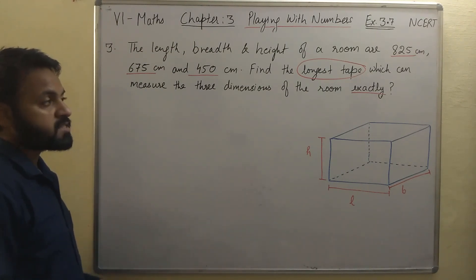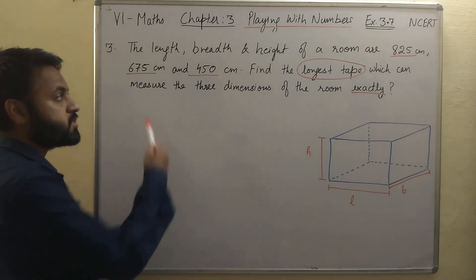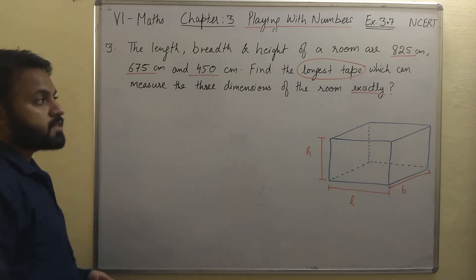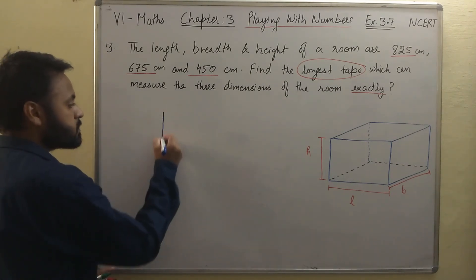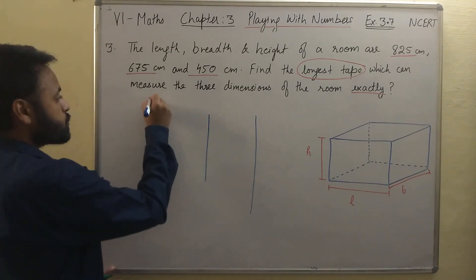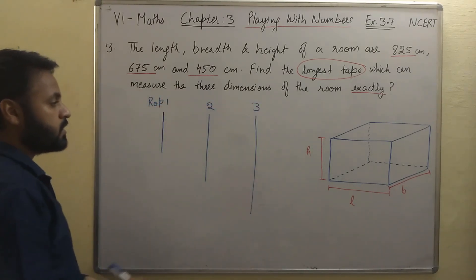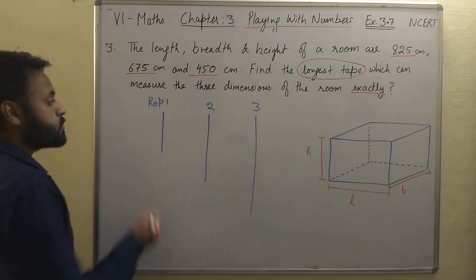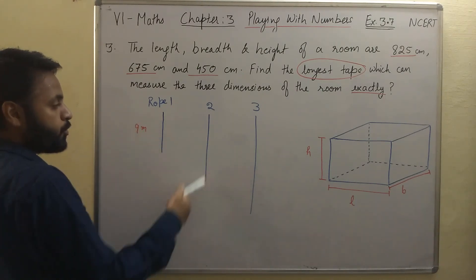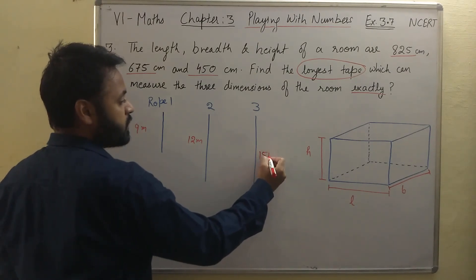How can we find the longest tape which can measure these 3 dimensions exactly, and what is the meaning of measuring these dimensions exactly? Let's take a simple example. Suppose we have 3 ropes: rope 1, rope 2, and rope 3, with lengths 9 meters, 12 meters, and 15 meters respectively.